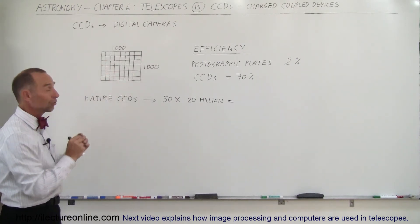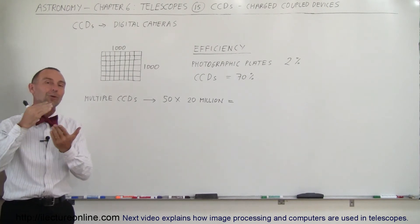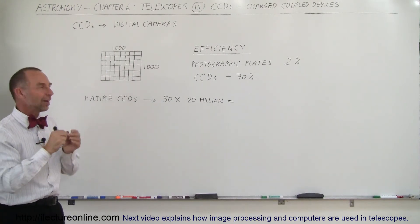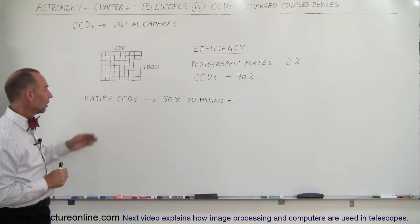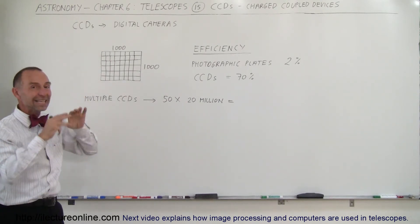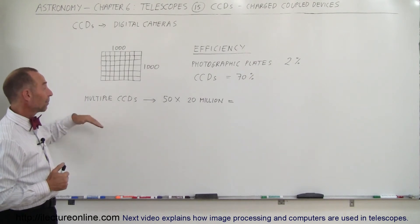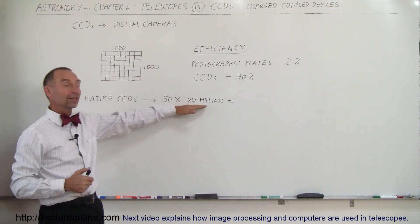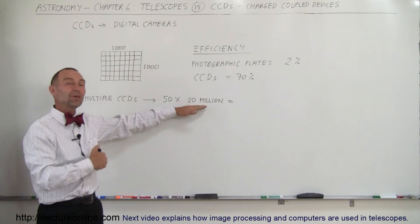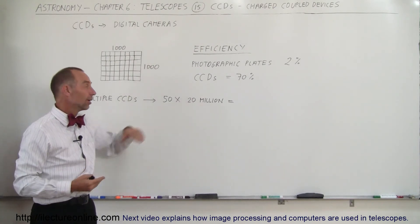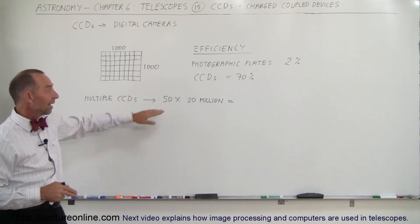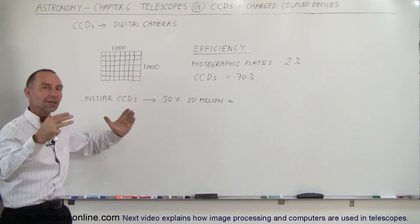The more pixels you have, the more accurate, the more sensitive, the higher resolution you can make your image. For example, sometimes we'll have multiple CCDs in the same electronic device below a telescope. Let's say you have CCDs that can have 20 million pixels apiece, like 4,000 to 5,000 on each side, and let's say you have 50 of them all crammed together in the same electronics.